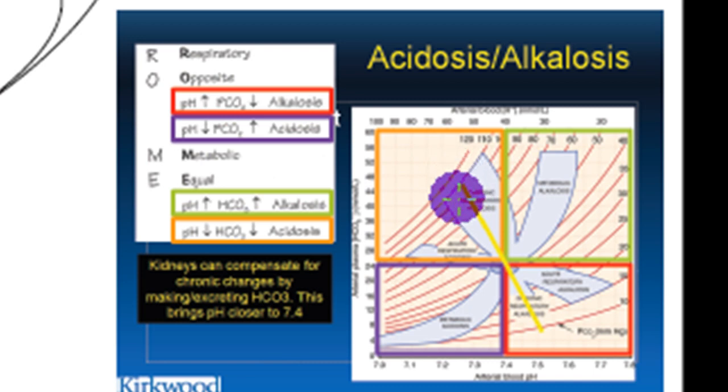And you see that with a low pH, generally you have a high bicarbonate and metabolic acidosis. Or in the case of metabolic acidosis, we have a low pH and a low bicarbonate.